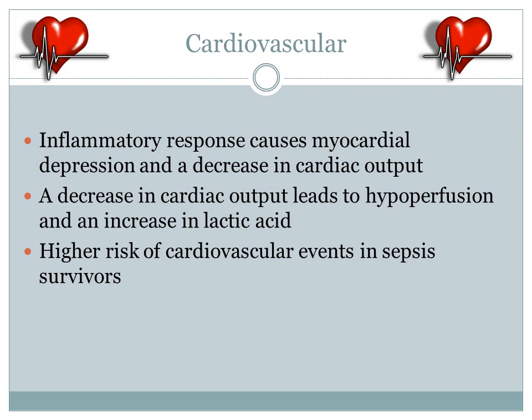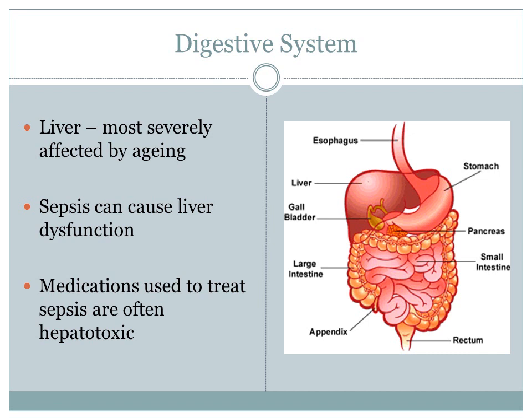Similar to the respiratory system, there are significant cardiovascular changes associated with sepsis. As the immune response evolves, myocardial depression is noticeable and causes a decrease in cardiac output. A decrease in cardiac output leads to hypoperfusion and causes an increase in lactic acid production, which can act as a myocardial depressant. There is a higher risk of cardiovascular events in sepsis survivors, which may be due to the presence of comorbidities. The older population is more susceptible to cardiovascular events and sepsis.